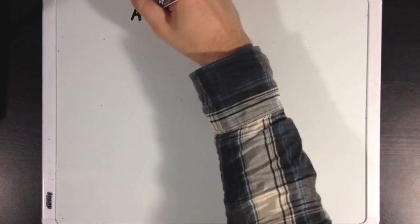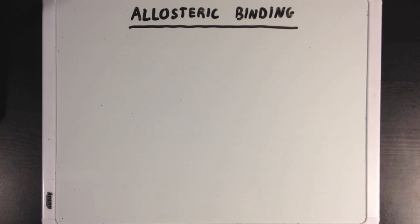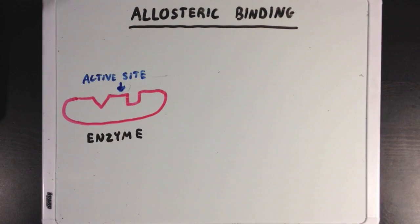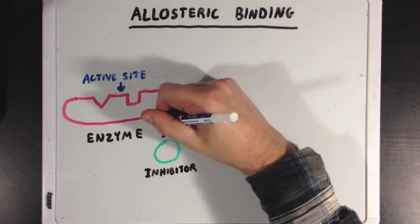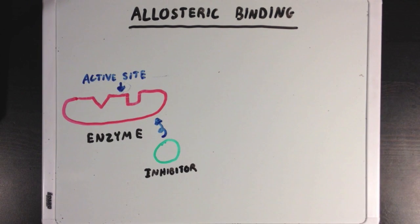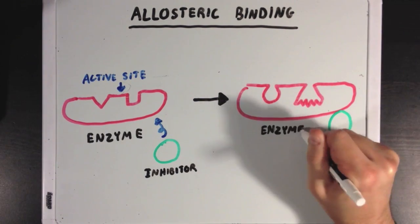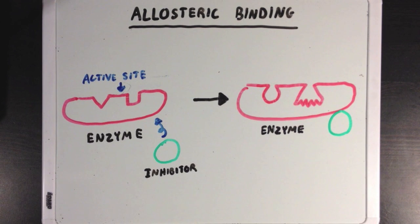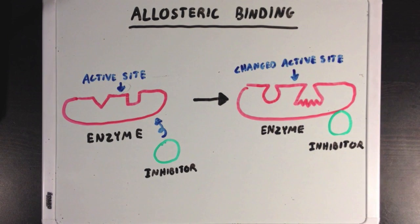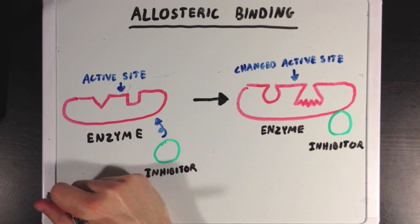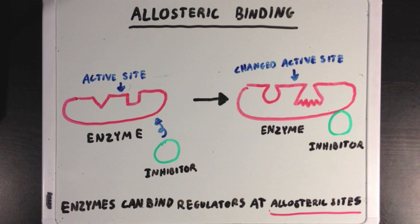Sometimes things will bind to enzymes at places other than their active sites — we call this allosteric binding. A regulating molecule, like an inhibitor, may bind the enzyme at a different location than the active site. When something binds to an enzyme like this, it usually has the effect of changing the shape of the enzyme in some way to affect its ability to catalyze reactions. In this case, when an inhibitor binds the enzyme, it might change the shape of the active site, thereby inhibiting the enzyme since it's no longer able to bind its intended substrate.